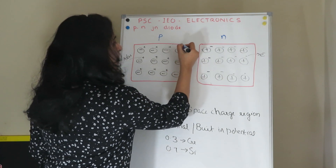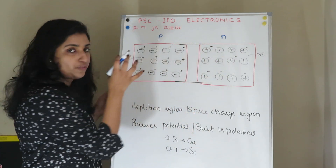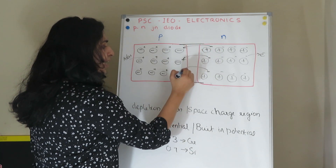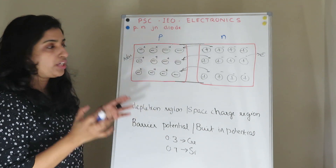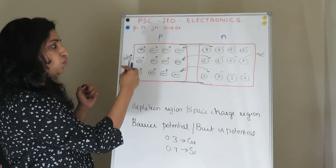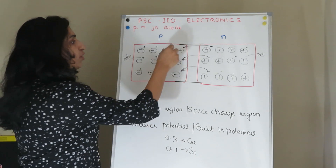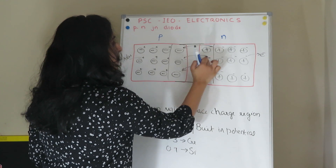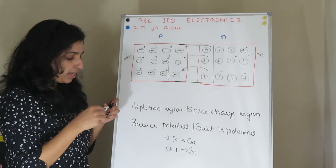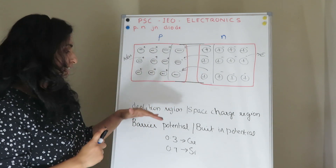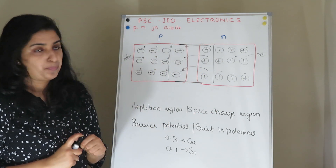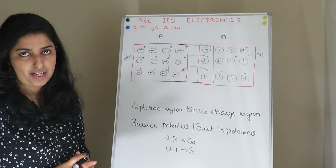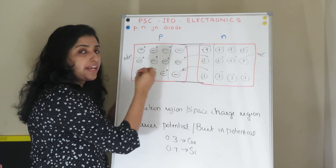Here, we have a junction formed. We have to move electrons — electrons and holes recombine. We have to form a region. In this region, we don't have majority carriers. This region is called the depletion region or space charge region. This creates an electric field in the direction from positive ions to negative ions, due to the recombination of electrons and holes.